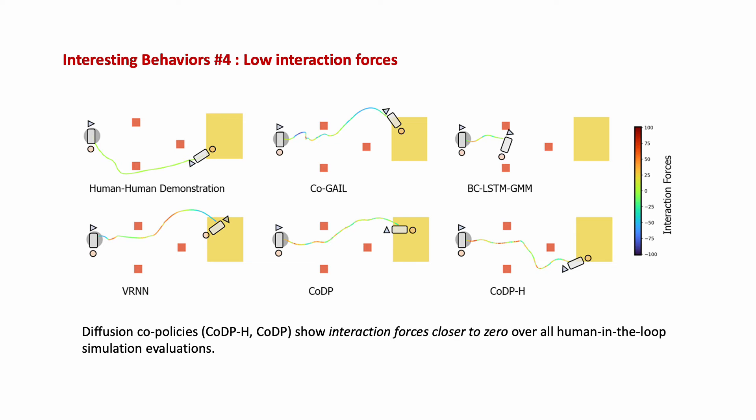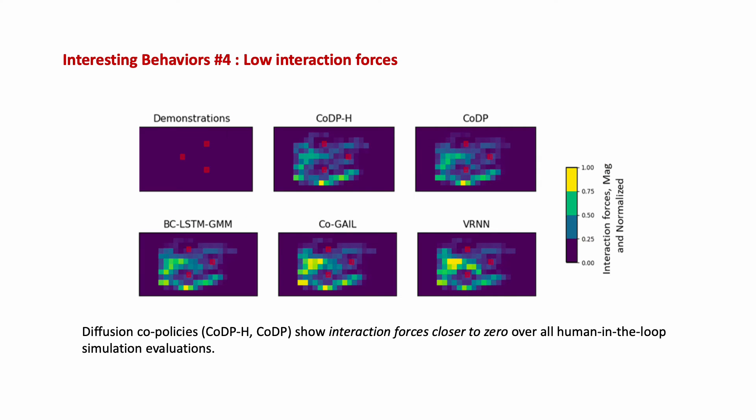We also investigate the quality of interaction in simulation by looking at interaction forces. These are forces that don't contribute to motion and are generally considered wasteful. Therefore, closer to zero is better. We observe closer to zero interaction forces over all simulation evaluations. Binning the interaction force magnitudes and normalizing them across all trajectories shows that CoDPH exhibits lower interaction forces than other methods over most parts of the trajectories.